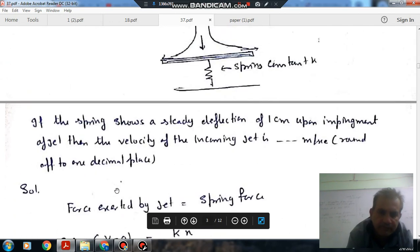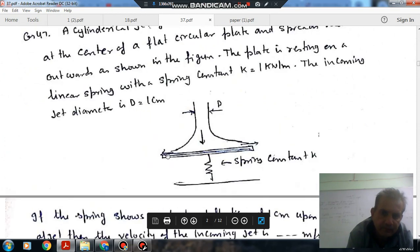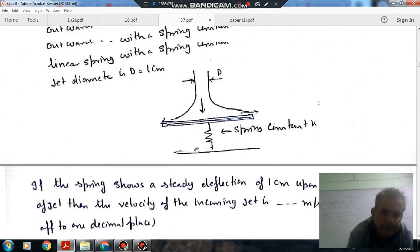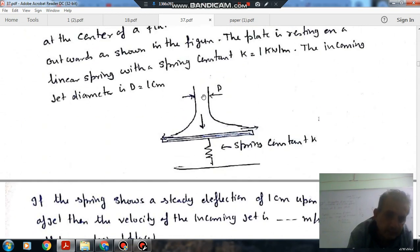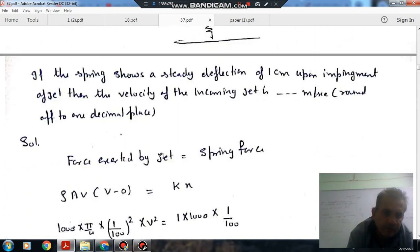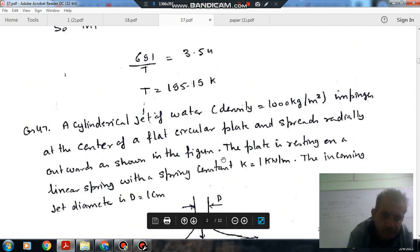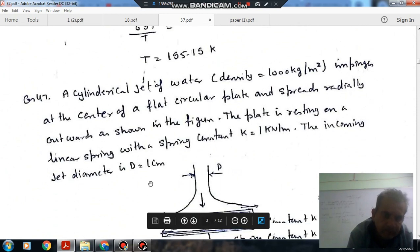Force exerted by the jet is the spring force. As the jet comes to rest when it strikes the plate, the force exerted by the jet will be given by change in momentum of the jet. That is mass flow rate times change in velocity. So mass flow rate is ρAV, where ρ is 1000 and area is π/4 D².